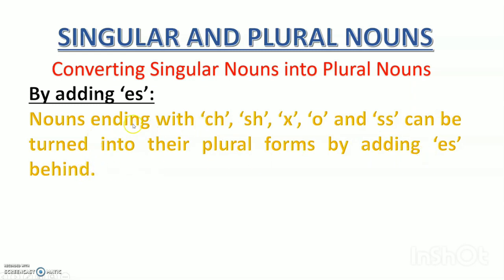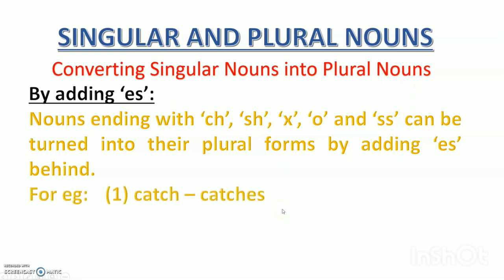We can do this when a noun ends in CH, SH, X, O, or SS — towards the end of the noun, there should be CH, SH, X, O, or SS, then only we use ES to write the plural form. For example, catch — when you play cricket and catch the ball with both hands, that's a catch. One catch, many catches. Can you see ES at the end? Because catch ends in CH, we put ES to get its plural form.